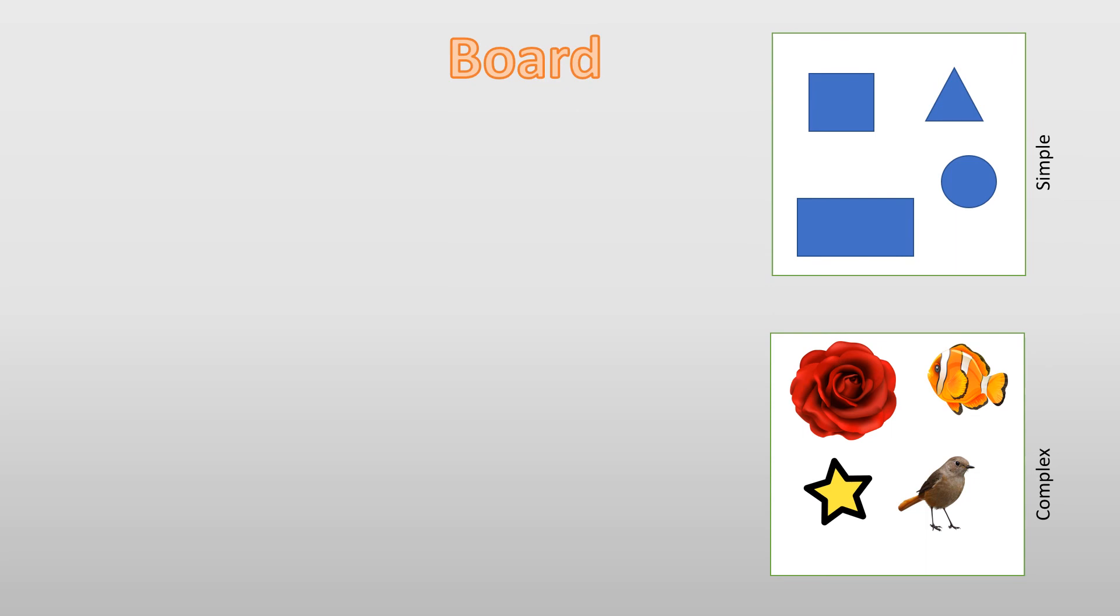Finally the board. For the board, we will show that there are two types, simple and complex. Simple like the simple shapes and the complex. If the child could recognize two simple shapes, he will be two years. Three simple shapes, three years. Four, four. If he could identify complex, then he will be four and a half.